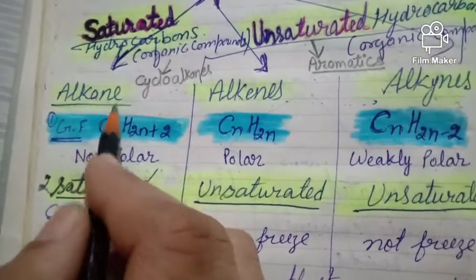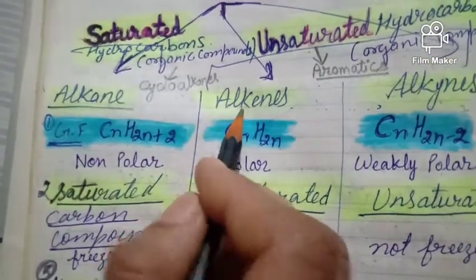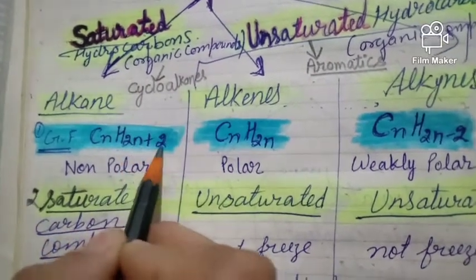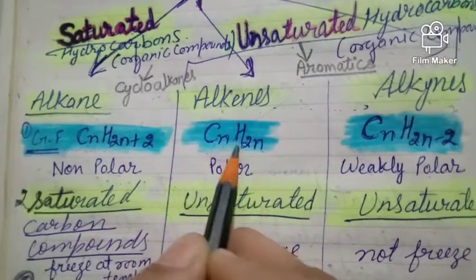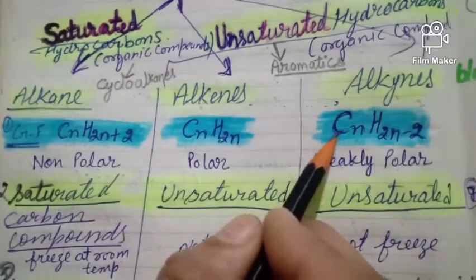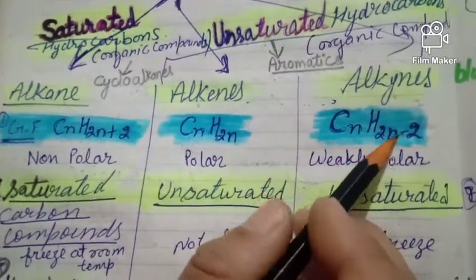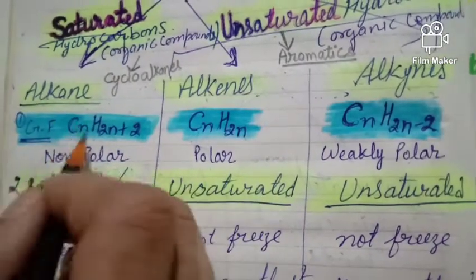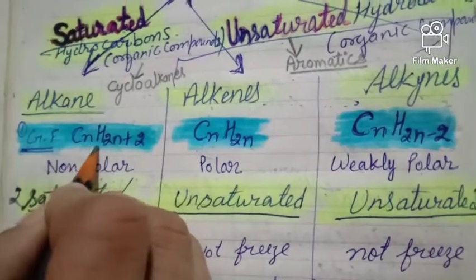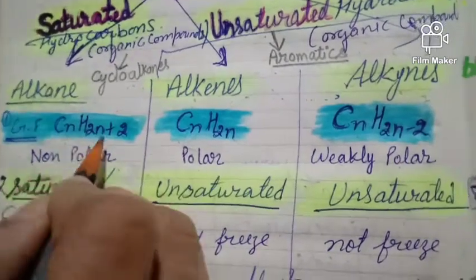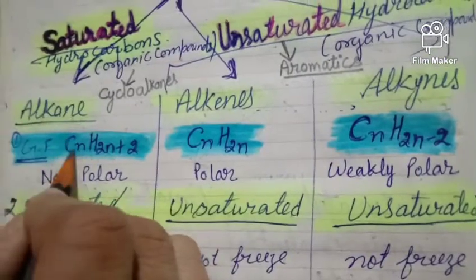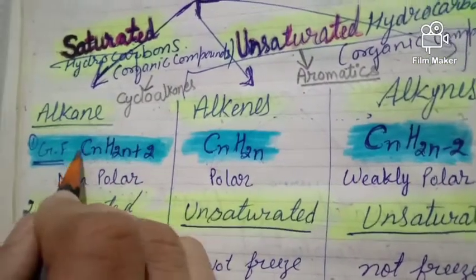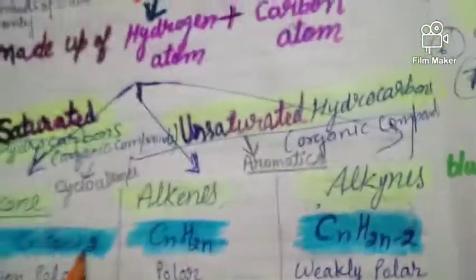Here I have written the general formulas for alkanes, alkenes, and alkynes. The general formula for alkane is CnH(2n+2), for alkene it is CnH(2n), and for alkyne it is CnH(2n-2). In the formula, n equals the number of carbon atoms. For example, if n equals 1, then for alkane: C1H(2×1+2) = CH4, which is the formula for methane.